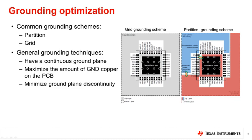Aside from choosing the appropriate ground scheme, there are other general grounding techniques to follow. It is strongly recommended to have a continuous ground plane. If the PCB is four layers or more, have one layer dedicated as a ground plane to ensure signals have the shortest return path to the power source. If the PCB is two layers or less, maximize the ground copper on each layer and keep it continuous. Also, ensure that ground plane discontinuity is minimized by carefully routing traces, reducing the number of vias, placing vias away from each other, and placing components so the ground plane is continuous throughout the board.